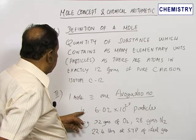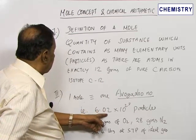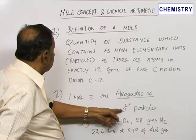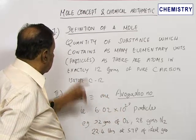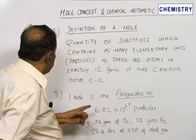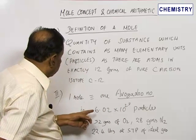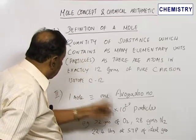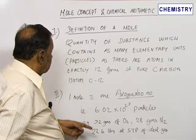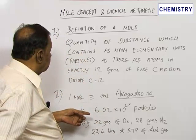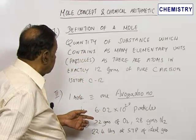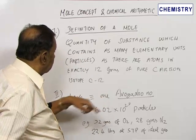It is very nearly 6.02 × 10^23 particles. So 6.02 × 10^23 molecules is one mole. 6.02 × 10^23 atoms is one mole of atomic substance.